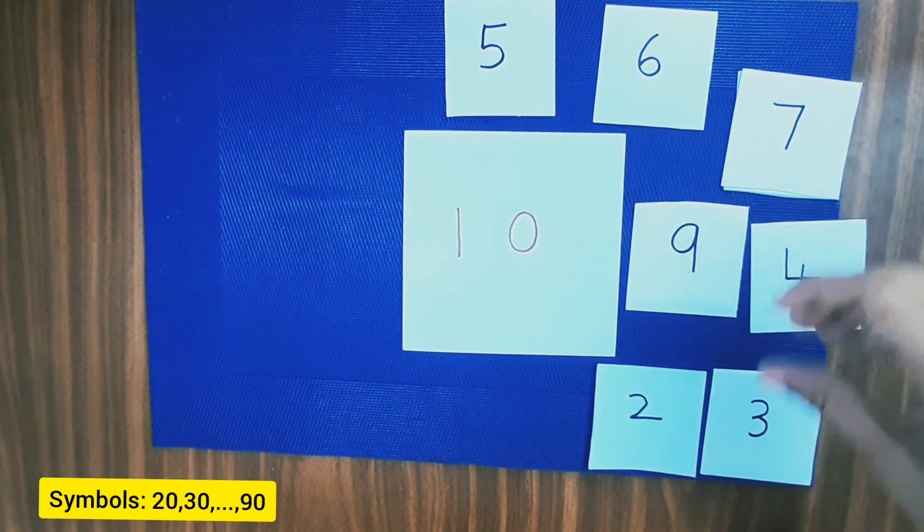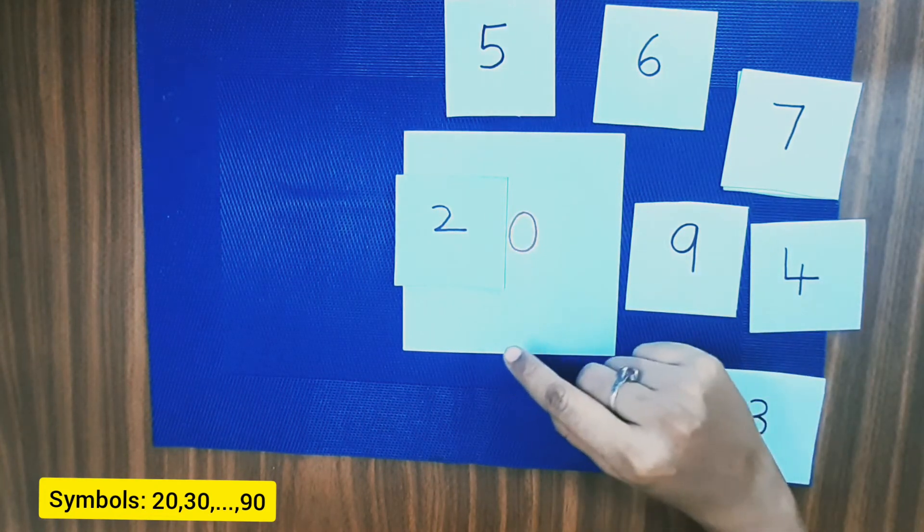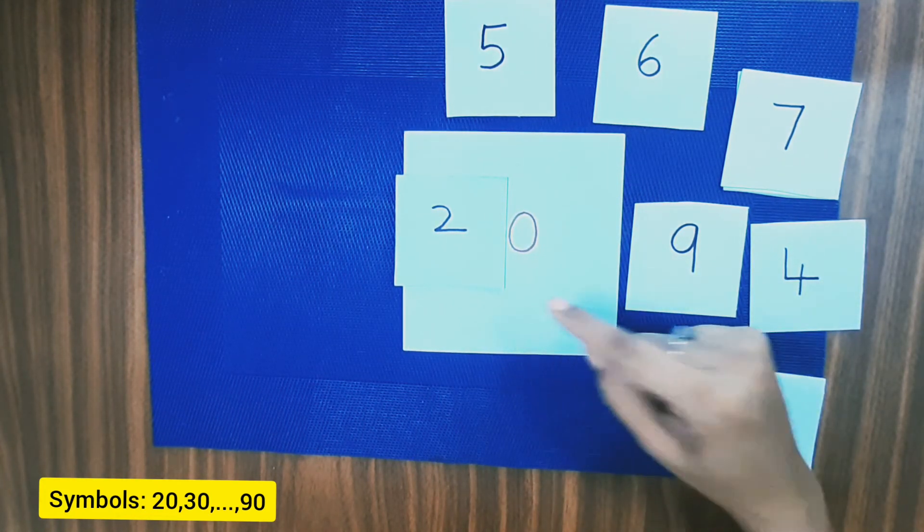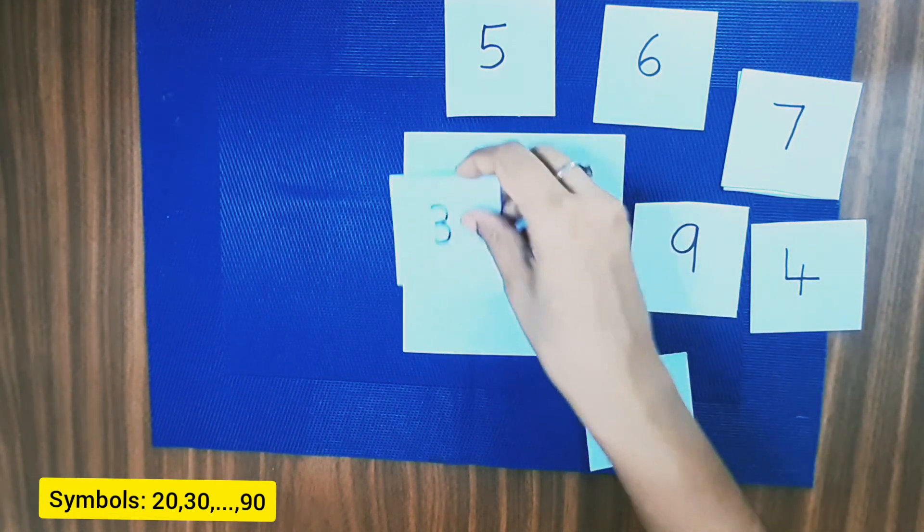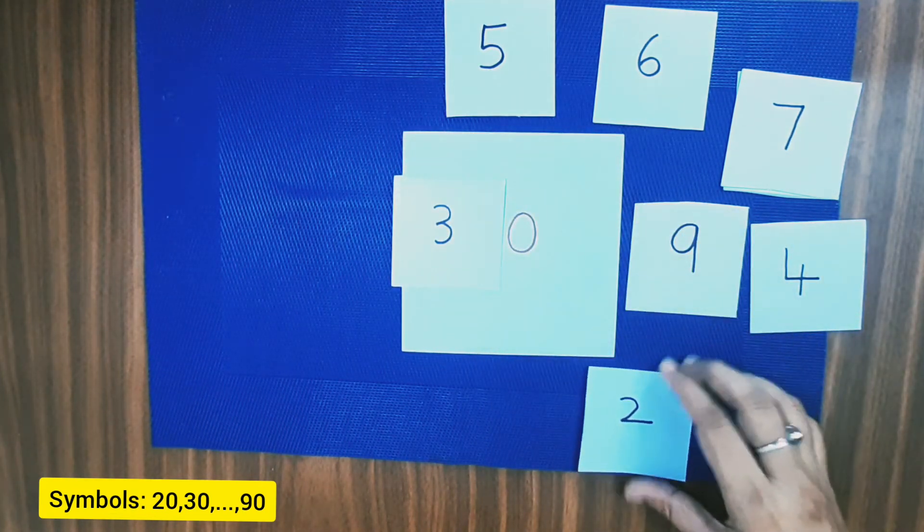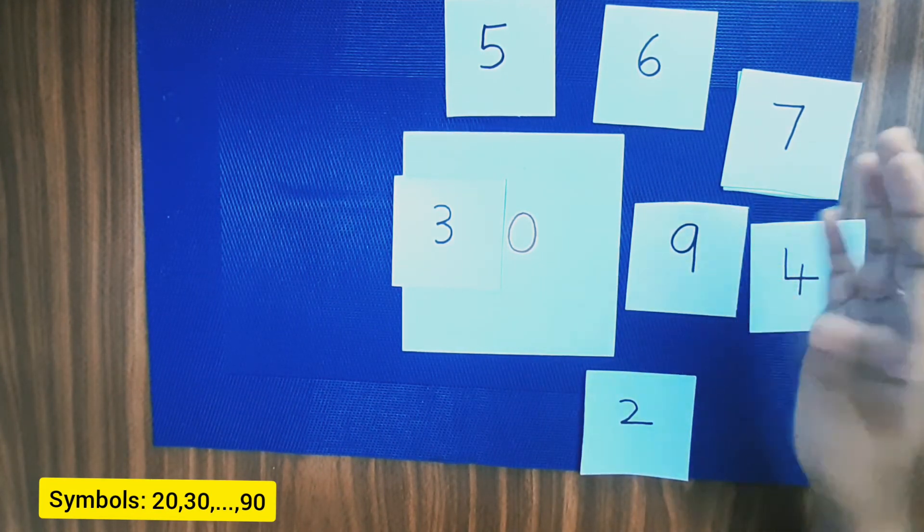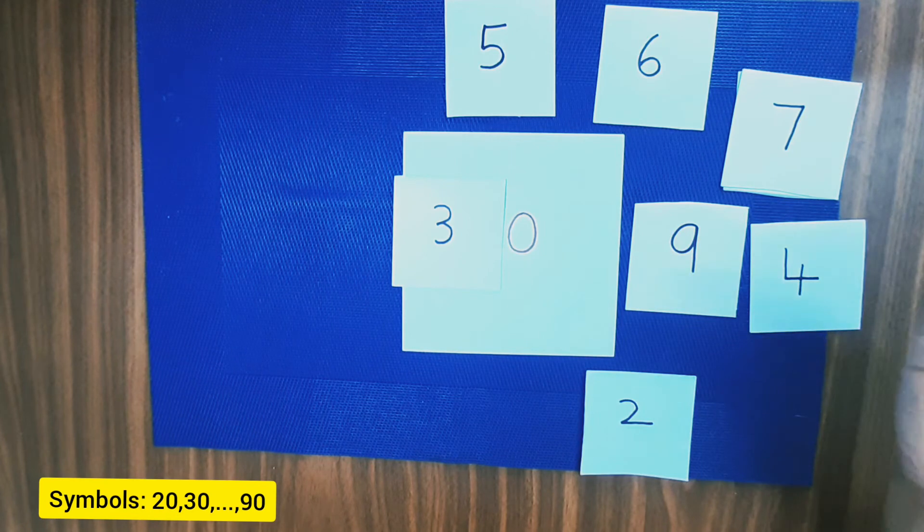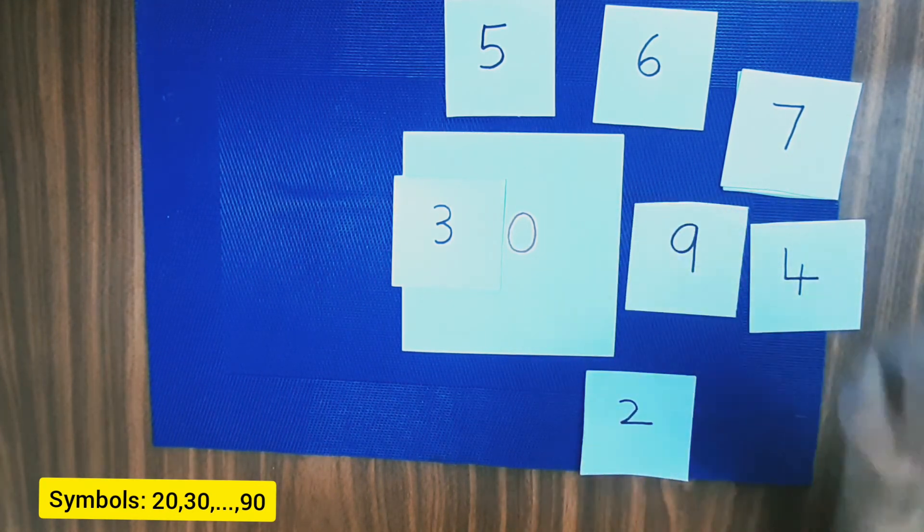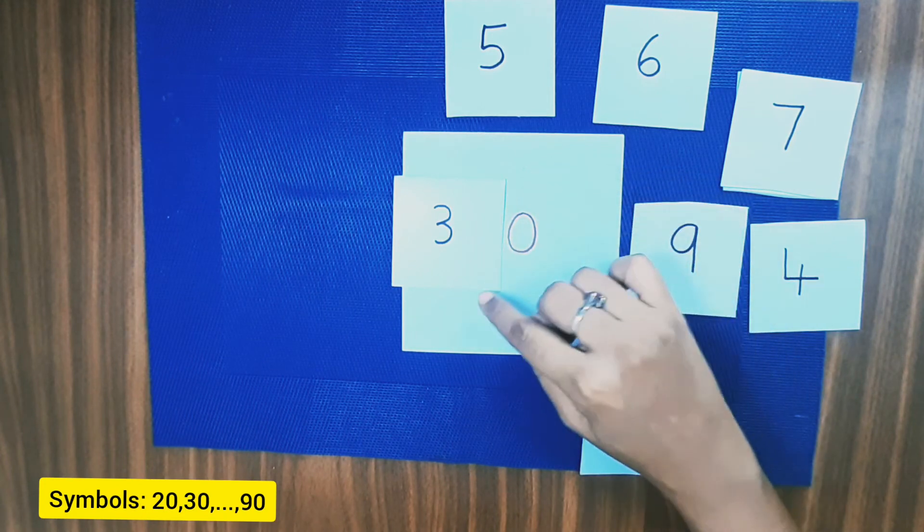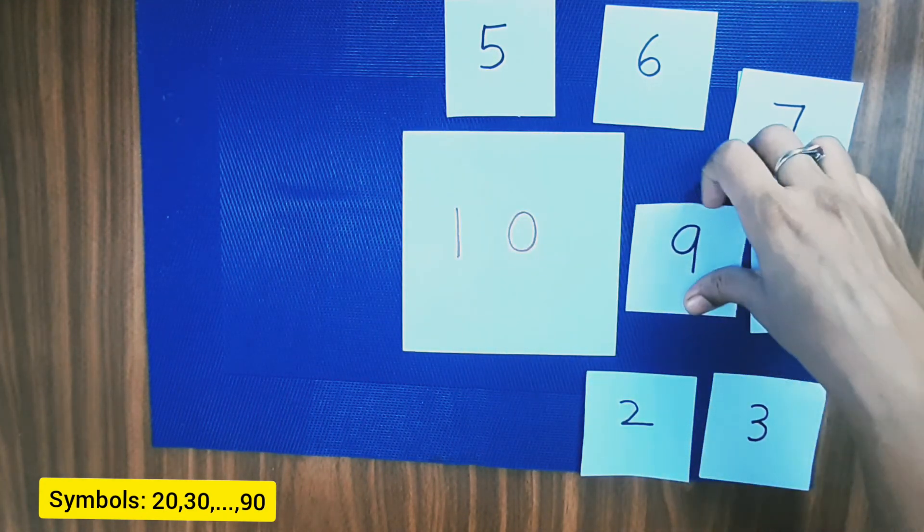So third period you can ask like this. What is this? The child may say 20. Always go in a sequence so that it will be easy. You can ask in random as well, but if you are going to ask in random, finish off by asking in sequence so that it will be easy for the child to comprehend. So ask, what is this? The child will say 30. You can do it till 90.